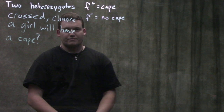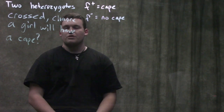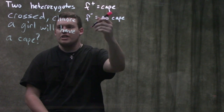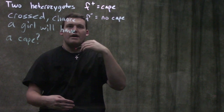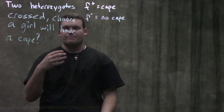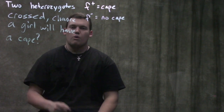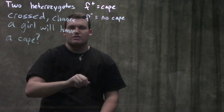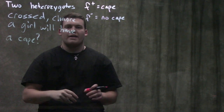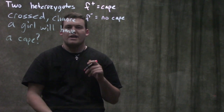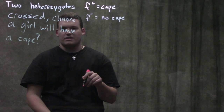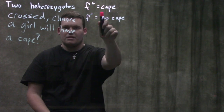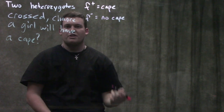One thing that's really important when doing these problems is you have to change your notation. In the past we've used a big A for a dominant allele and a small a for a recessive allele. This time we're going to use f-plus and f-minus — something that doesn't tell you dominant versus recessive. F-plus is the caped allele; f-minus is the no-cape allele.